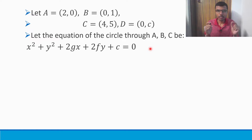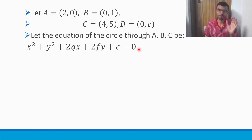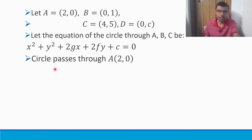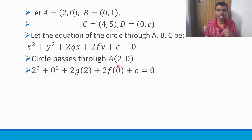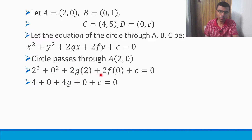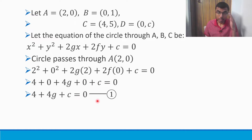Since this circle is passing through A, B, and C, that means A, B, and C lie on that circle — basically A, B, and C satisfy this equation. First, I'm going to substitute the coordinates of A into this equation. Circle passes through A(2, 0). So in place of X and Y, put 2 and 0. 2² is 4, 0² is 0, 2G×2 is 4G, 2F×0 is 0, plus C. So if you solve it, this is my first equation.